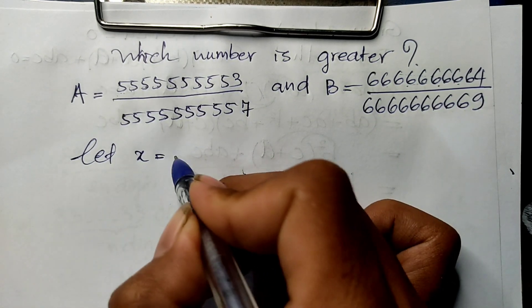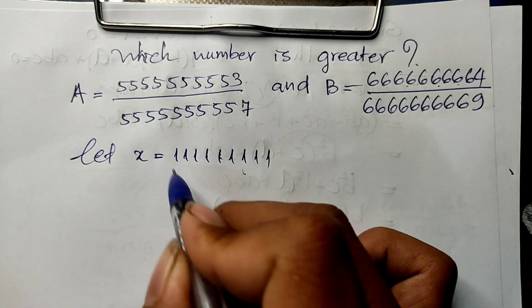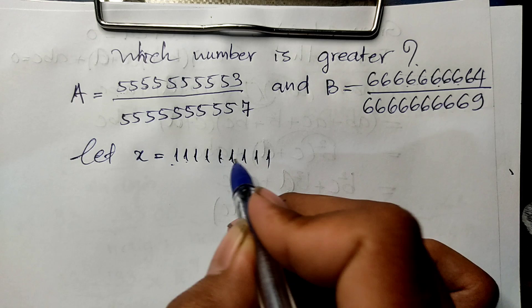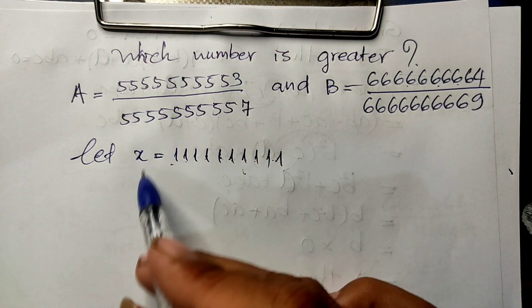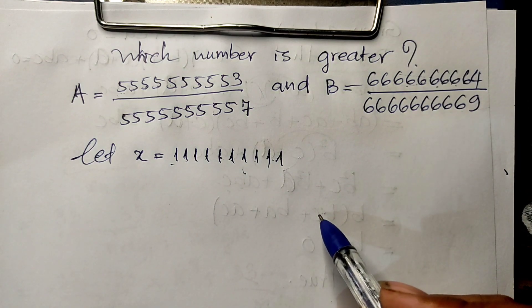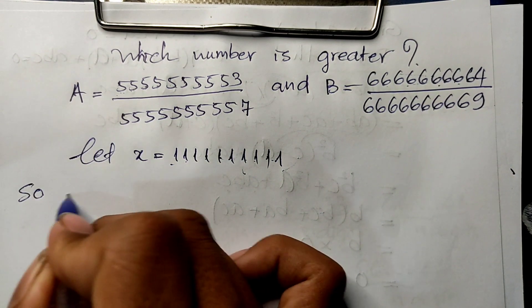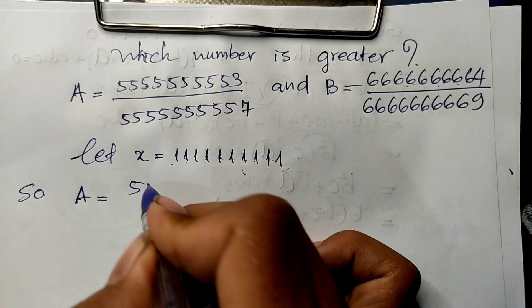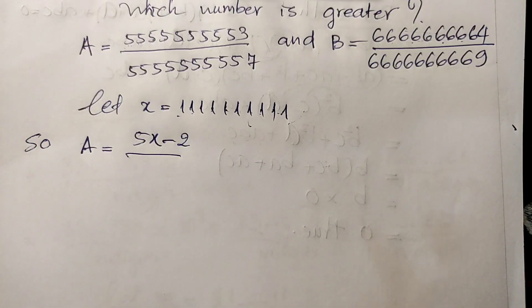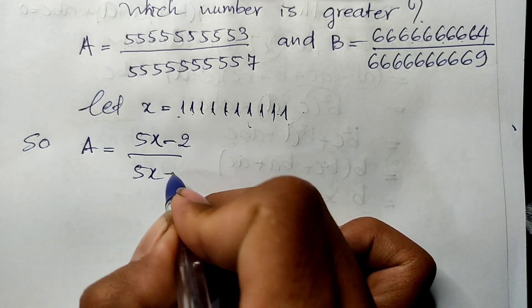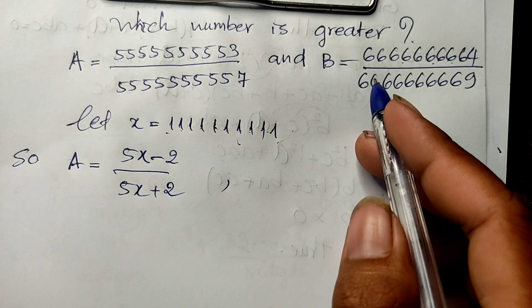So this is equal to 1, 1, 1, 1, 1, 1, 1, 1, 1, 1 — that's 1 repeated, then 1, 2 times 10. We get 1, 1, 1, 1, 1, 1, 1, 1, 2, 2, 2, 2, 2, 2, 2, 0 — the number.